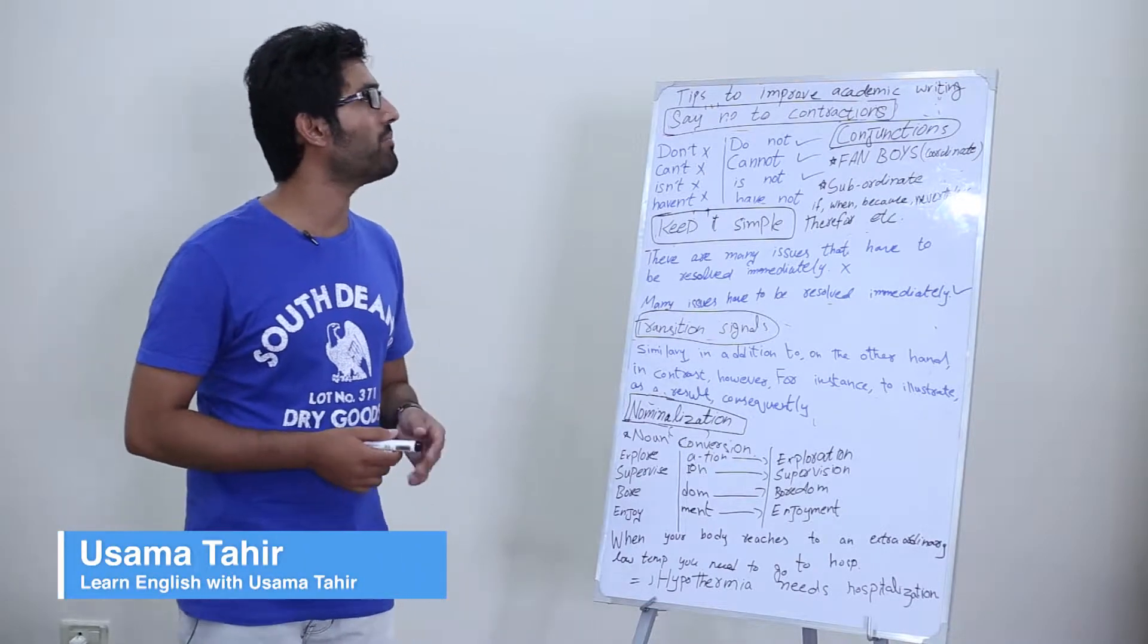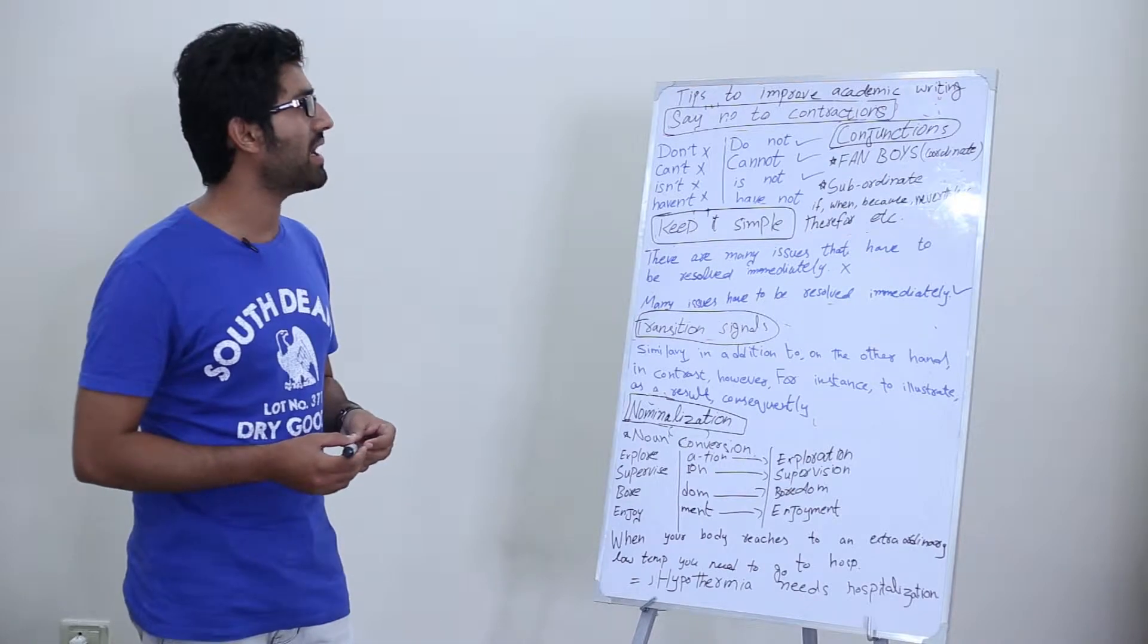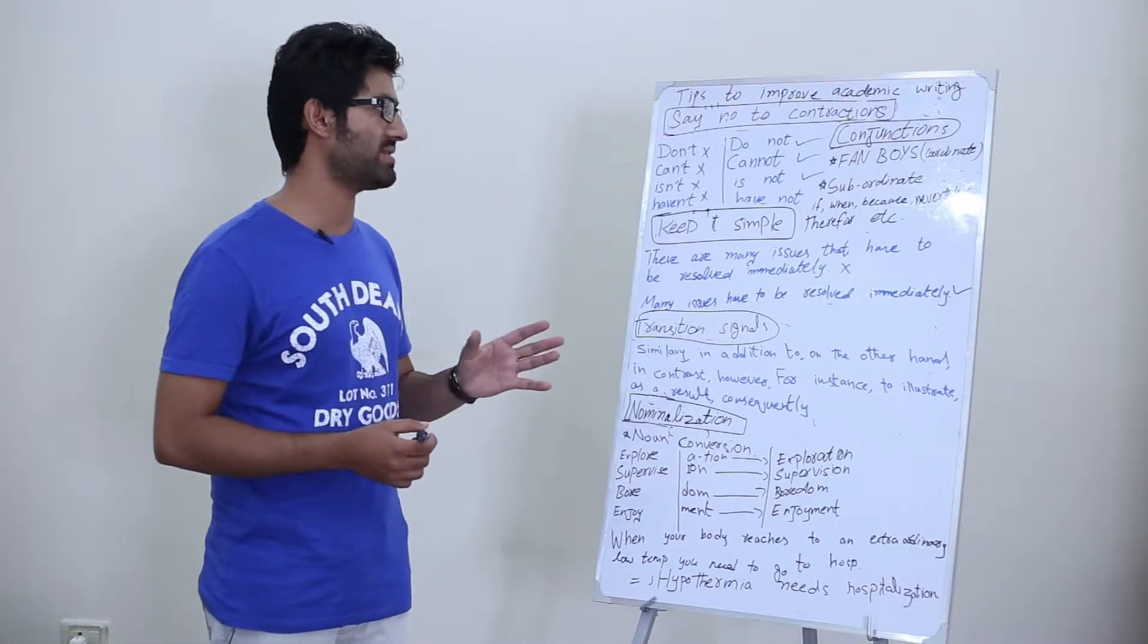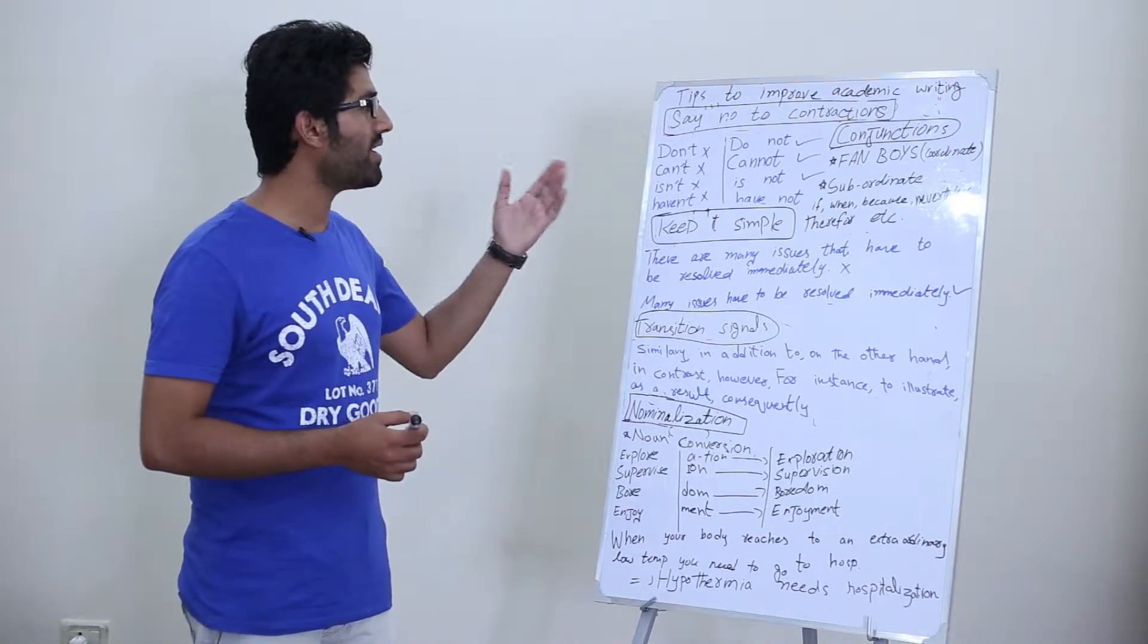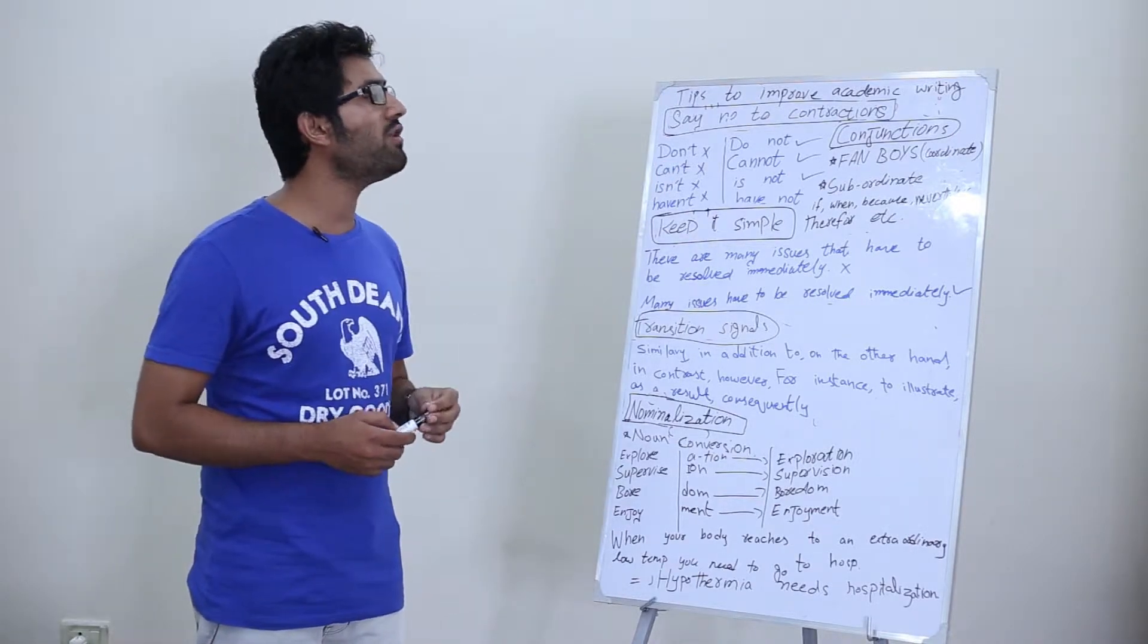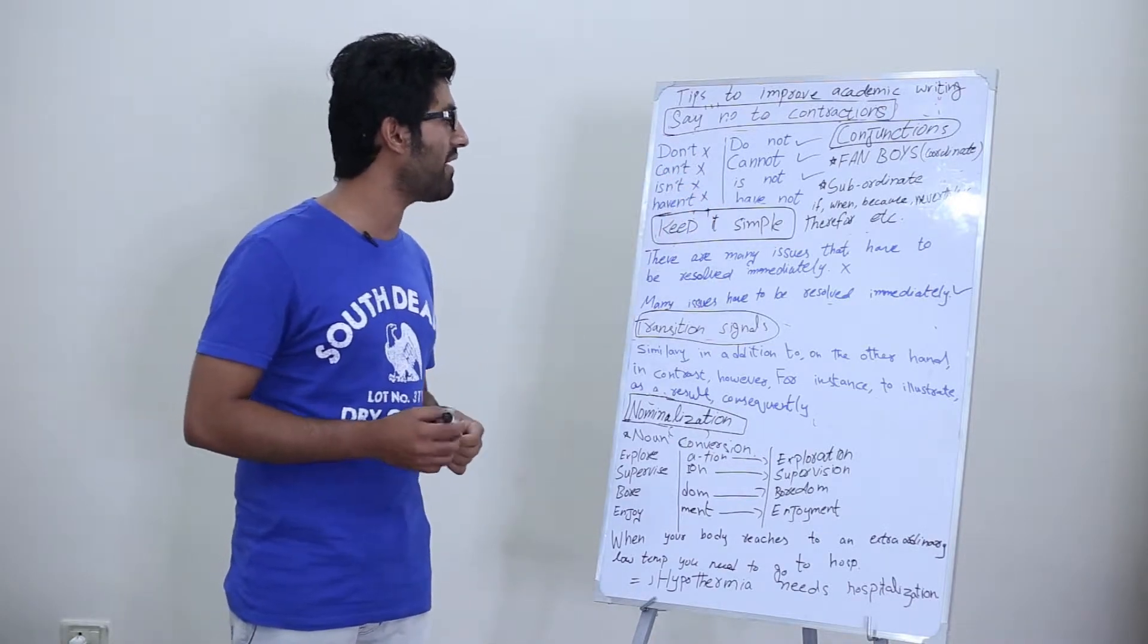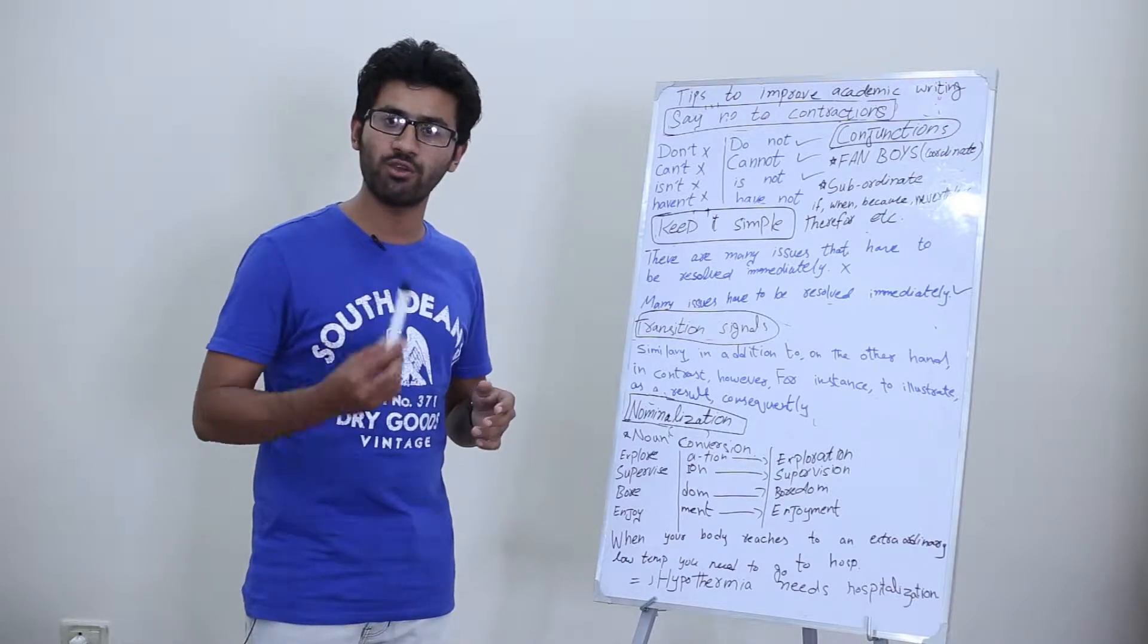Hi guys, today we will learn about improving academic writing skills. There are a few tips that can be helpful. First one is say no to contractions. You are not supposed to use contractions while you are writing any academic piece. You should use the full form like don't becomes do not, can't becomes cannot, isn't becomes is not, haven't becomes have not. It gives a bad impression if you are using the contracted forms, so always use the full forms.